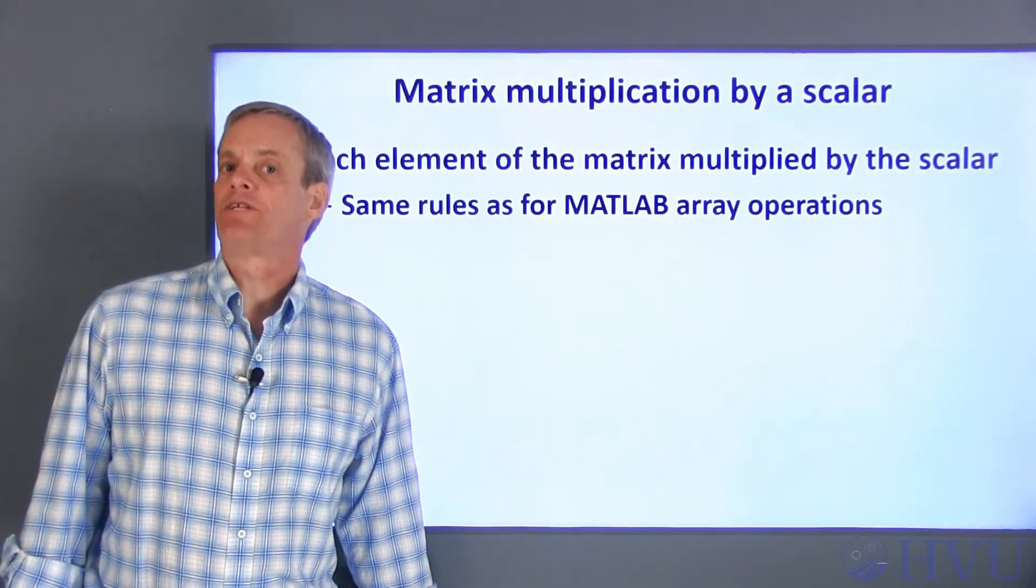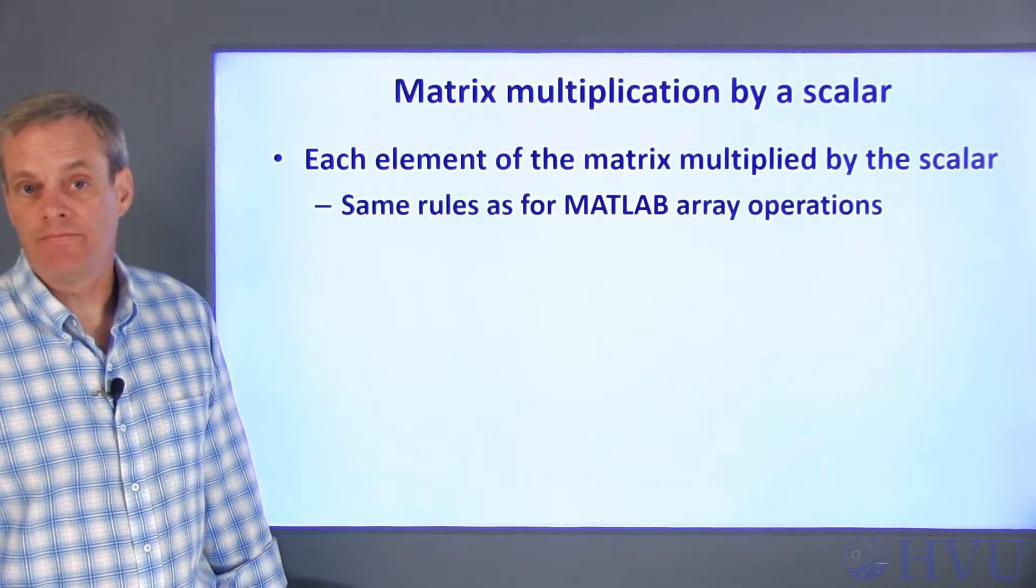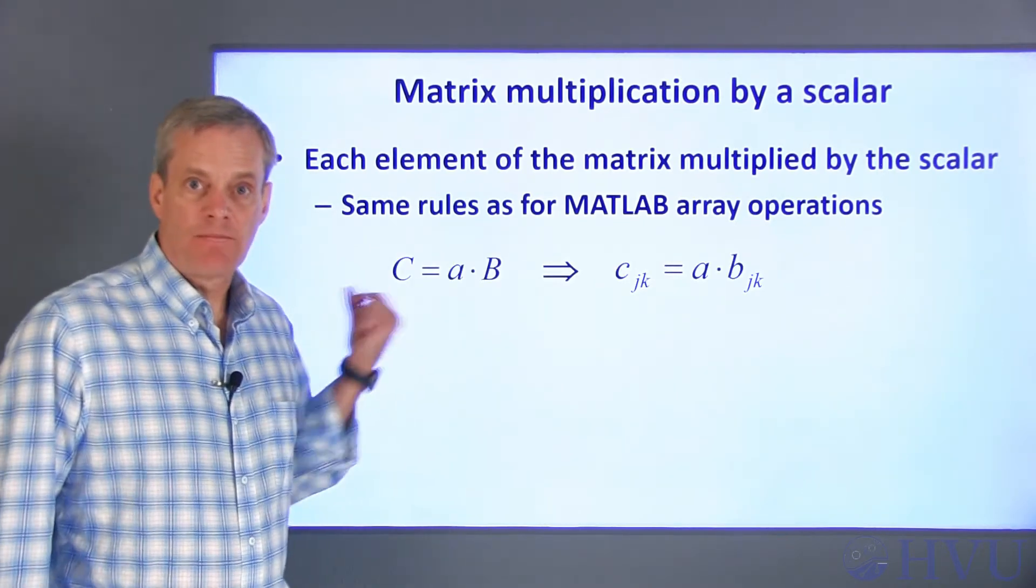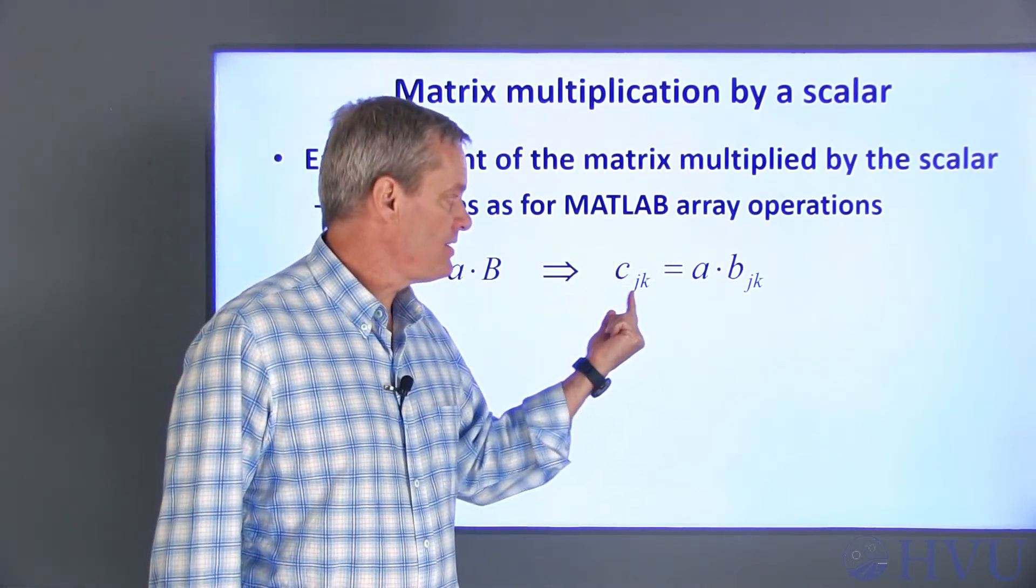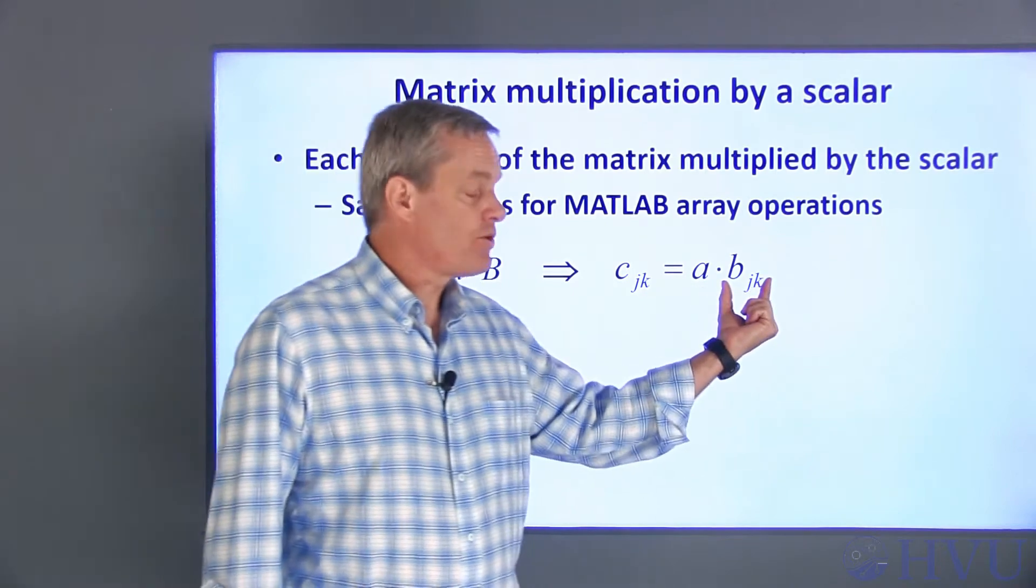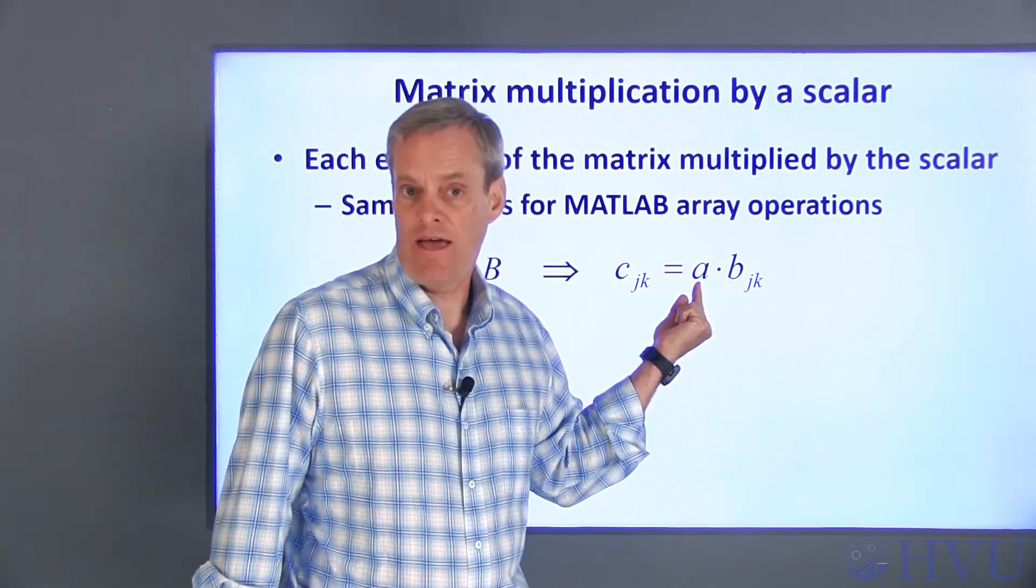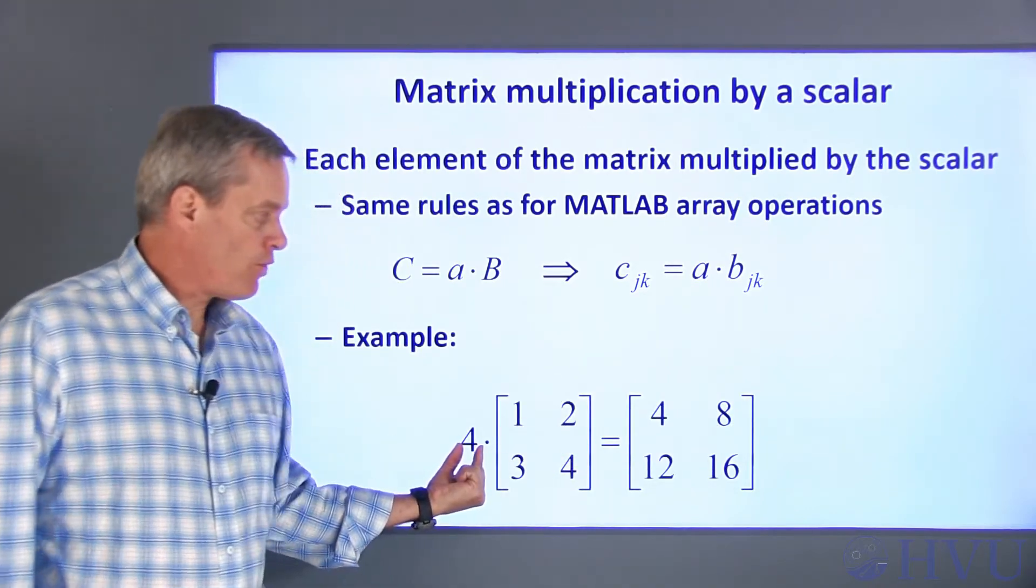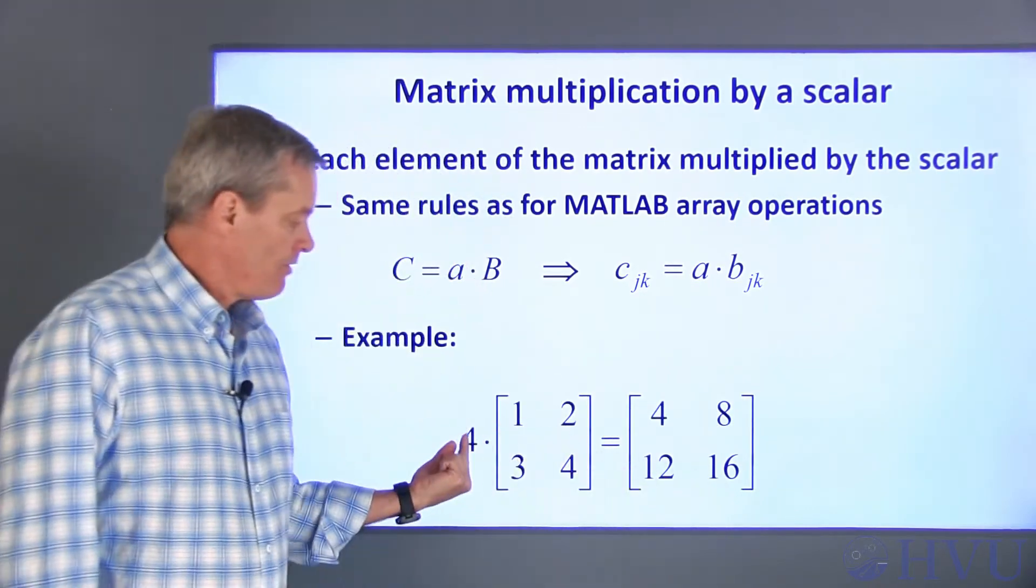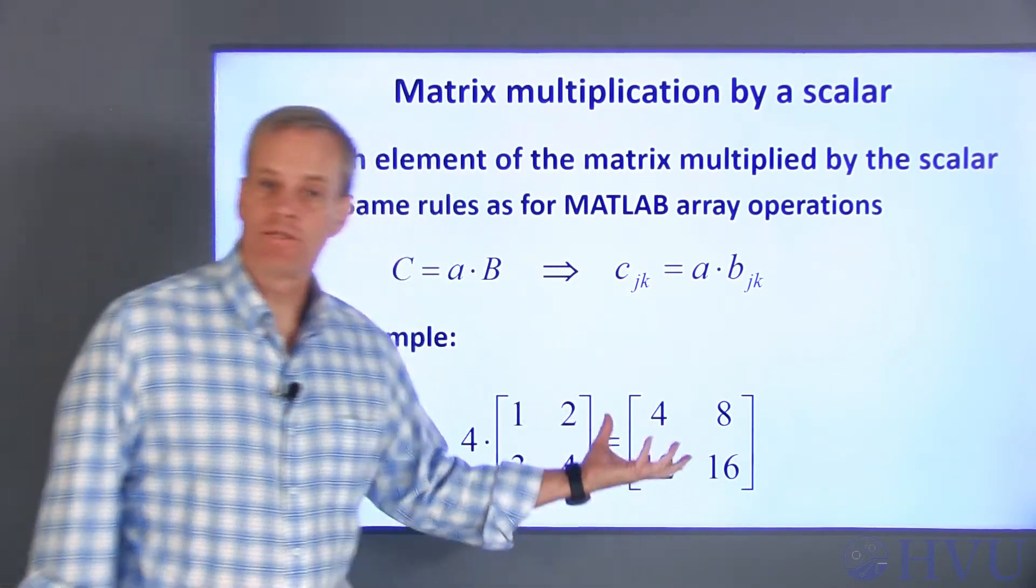Multiplication of a matrix by a scalar is also the same as the corresponding array operation. If C is the product of a scalar A times a matrix B, the elements of C, C sub jk, are just the corresponding elements in B, each of which is multiplied by the scalar A. For example, if I multiply this matrix by 4, the result is this. 4 times 1 goes in this location, 4 times 3 is 12, and so on.